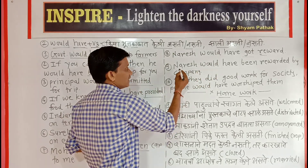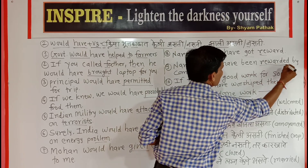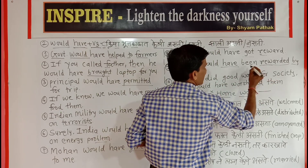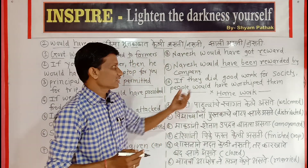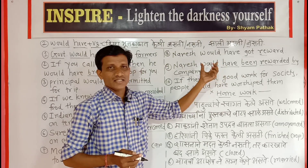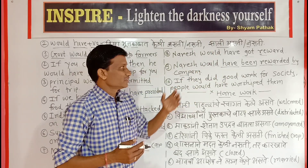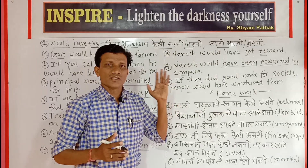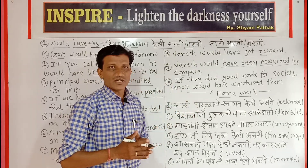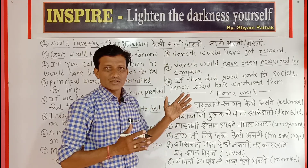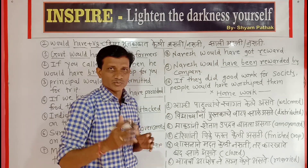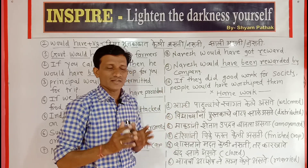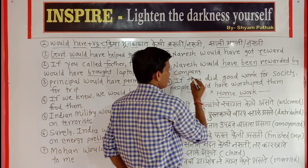Please watch this carefully. 'Narish would have been rewarded by company.' Here, after 'would have,' instead of V3 directly, we use 'been' followed by V3 — this is a passive voice construction. These sentences follow passive voice structure, different from active voice. We will make a separate active and passive voice video series after this.